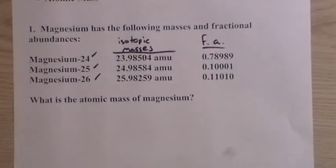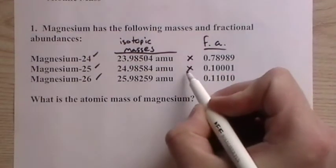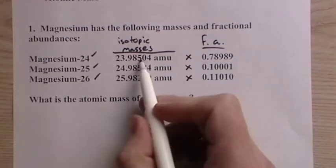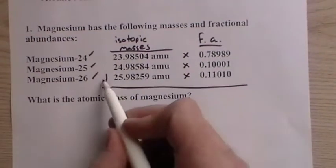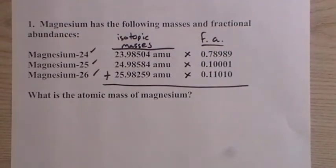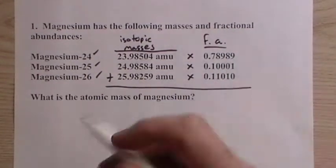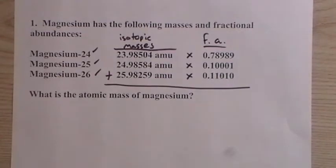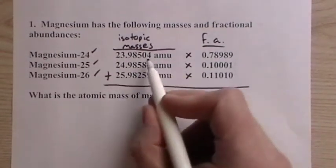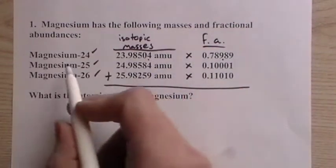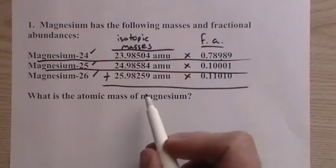So the way that you find what you have to do is you have to multiply these, this times this, this times this, this times this, and then add them up. But what happens, a lot of the time people will add these together, multiply, they'll divide. It's all kinds of crazy stuff that happens. All you have to do is multiply them each, the mass times its fractional abundance, and it'll be set up just like this, or in a table like this, and then add them up.